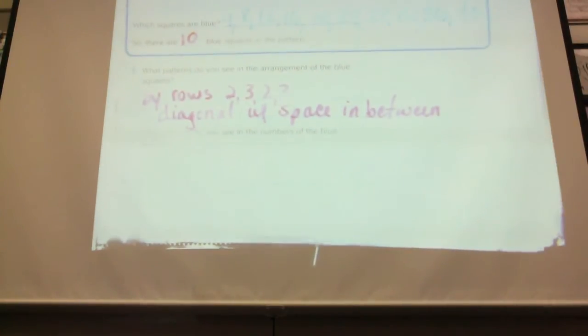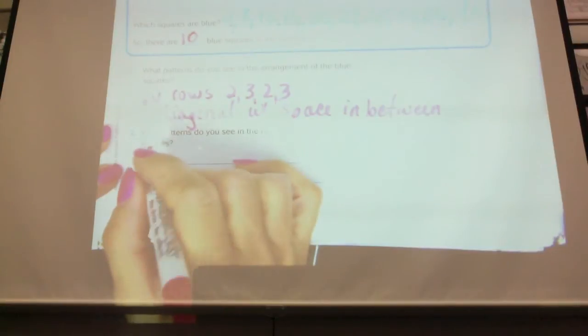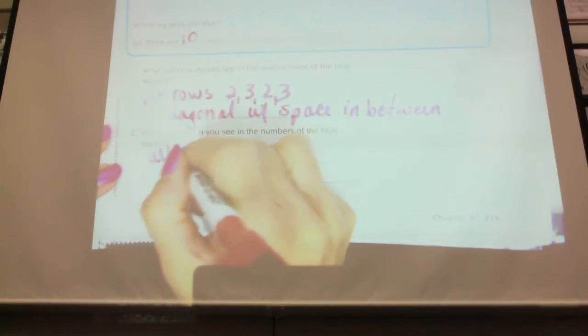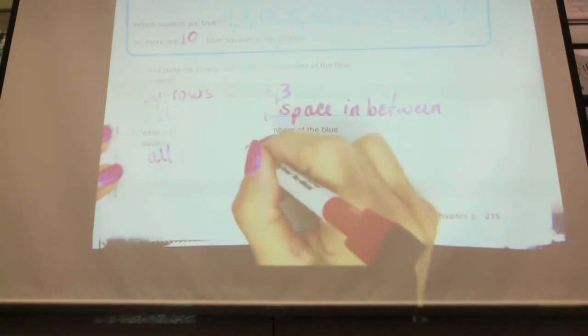What pattern do you see in the numbers? So before we're looking at the blue squares, what about the numbers? What pattern do you see in the numbers? We've actually already said this once. What's one of the patterns we see? Haley. They're all even numbers. Okay, they're all even. What else? They're skip counting by four, right?